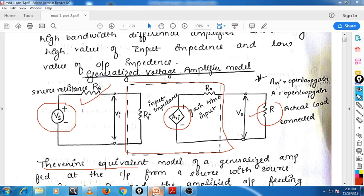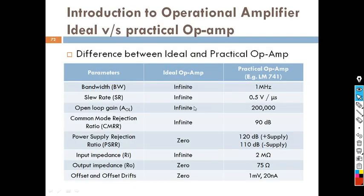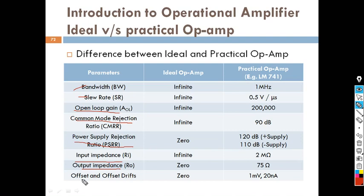We will now look at the difference between ideal and practical operational amplifiers. The various parameters used to compare them are: bandwidth, slew rate, open loop gain, common mode rejection ratio, power supply rejection ratio, input impedance, output impedance, and offset. We have to study all these parameters when comparing ideal versus practical operational amplifiers.